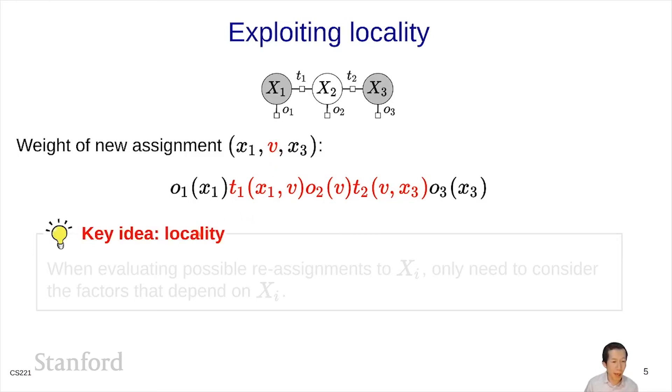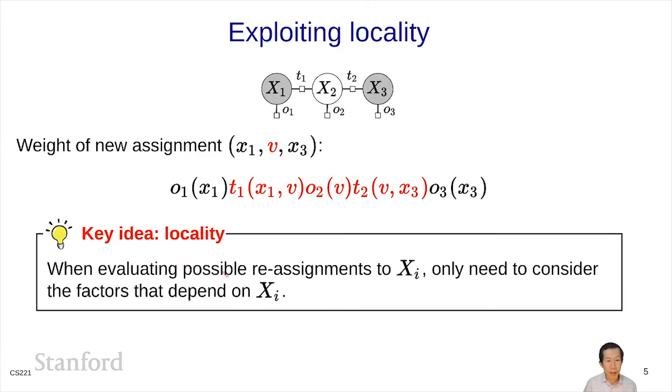This is an idea of locality which leverages the structure of the CSP. When evaluating possible reassignments to some variable xi, we only need to consider the factors that depend on xi. In the factor graph where there's lots of variables and you're trying to reassign one variable which might have a small neighborhood, then you're saving a lot of effort.